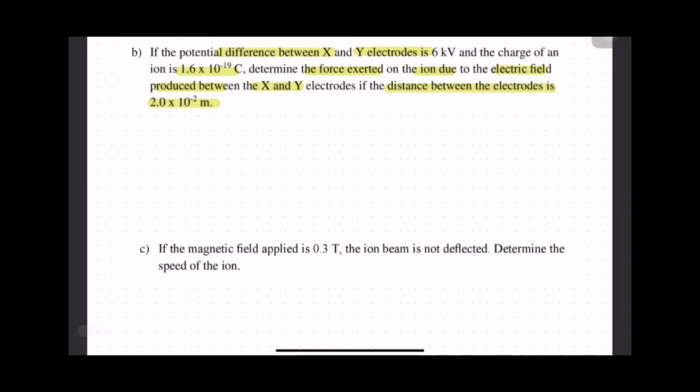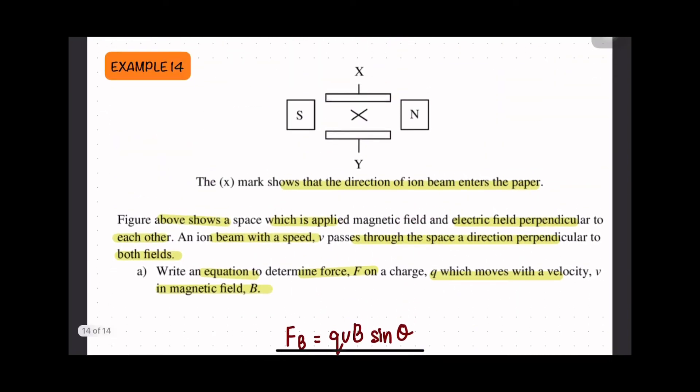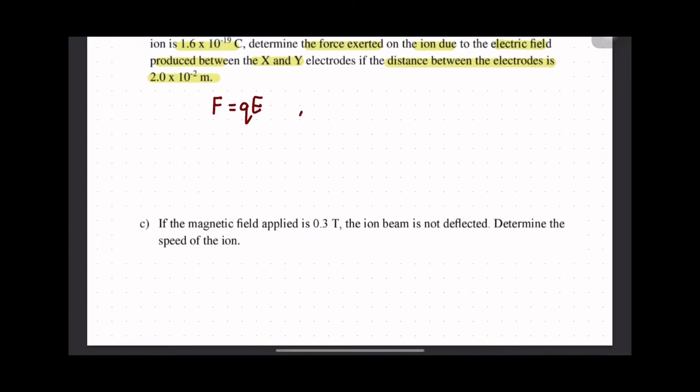Untuk case ni kita nak cari electric field. So apa kaitan electric field dengan F? F = qE. And then kita guna case ni macam parallel plate - kita letak 2 plates X dengan Y. Bila ada plate, kita boleh guna formula yang relate dengan plate: V = Ed, whereas V adalah potential difference. So combine this all together: FE = qV/d.